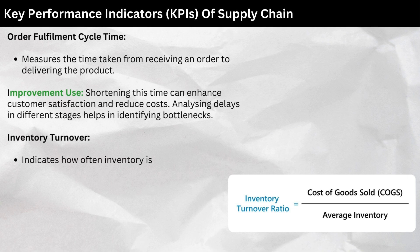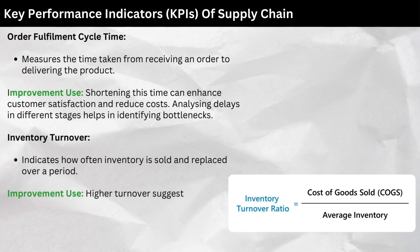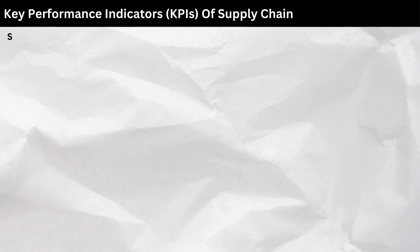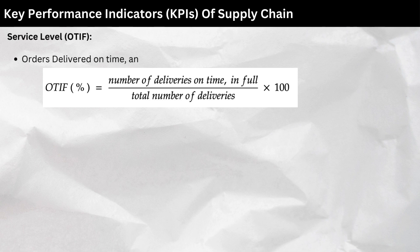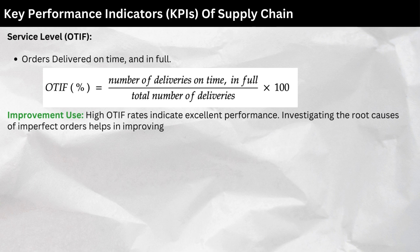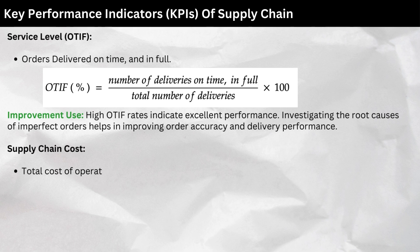Inventory turnover: Indicates how often inventory is sold and replaced over a period. Higher turnover suggests efficient inventory management. Low turnover can indicate overstocking or slow-moving products, prompting a review of inventory policies. Service level — OTIF (Orders delivered on time and in full): High OTIF rates indicate excellent performance. Investigating the root causes of imperfect orders helps in improving order accuracy and delivery performance.